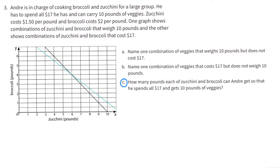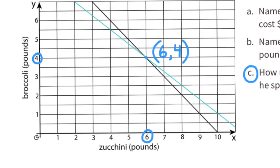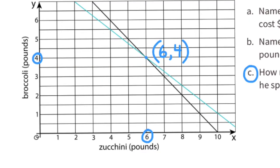Part C: How many pounds each of zucchini and broccoli can Andre get so that he spends all $17 and gets 10 pounds of veggies? This is going to be the point where the two lines intersect, so the only point I can select is 6 pounds of zucchini and 4 pounds of broccoli.